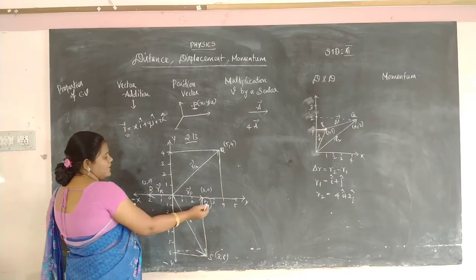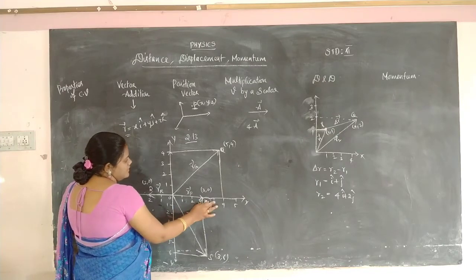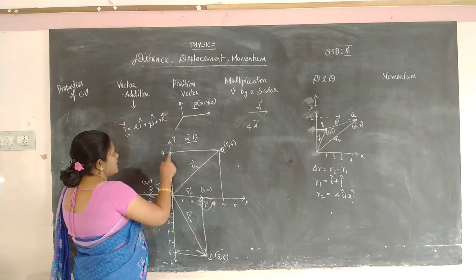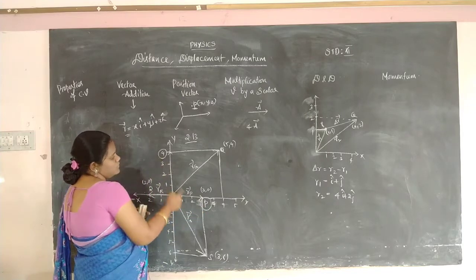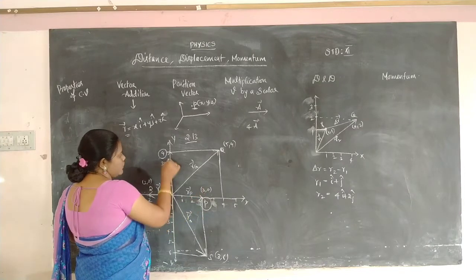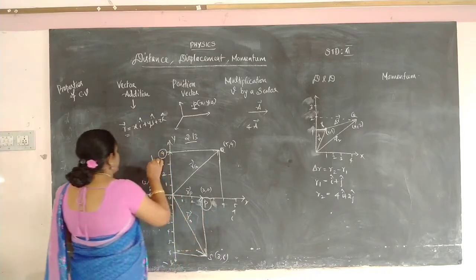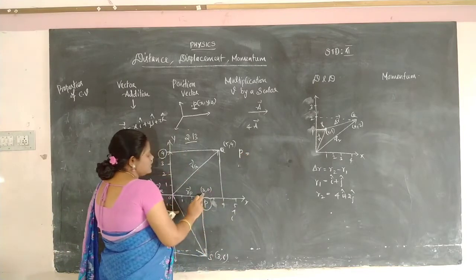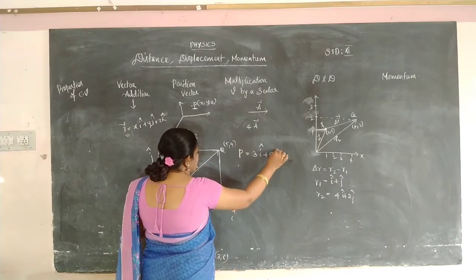P is lying at X-axis value 3, and Y-axis value 4. So mentioned as 3 in X-axis with unit vector i, the position vector of P = 3·i + 4·j. Then Q is at X-axis 5 and Y-axis 4, so Q's position vector = 5·i + 4·j.